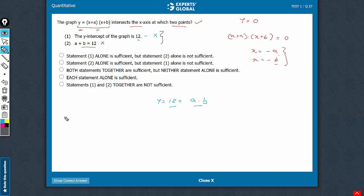However, when we combine, statement 1 gave us one equation that a times b is 12 and statement 2 gives us one more equation that a plus b equals 12. We have two equations, two variables. We will be able to solve them.